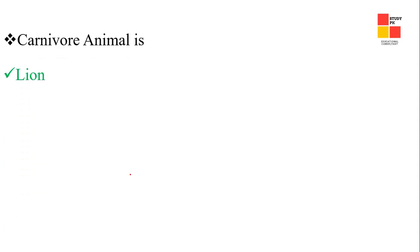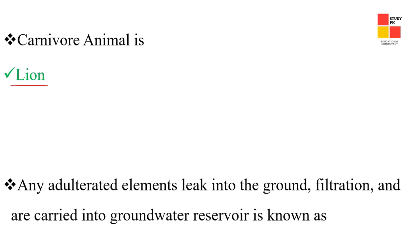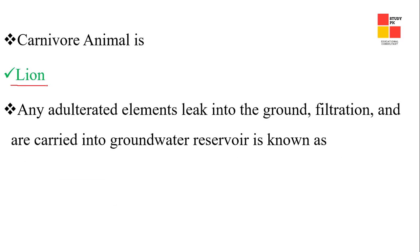Next question: a carnivore animal example — the right answer is a lion. Next question: any adulterated elements that leak into the ground through filtration and are carried into a groundwater reservoir is known as water pollution.